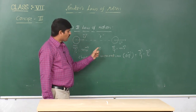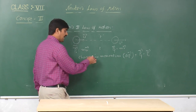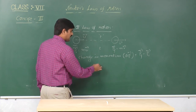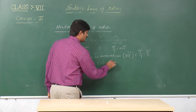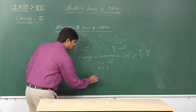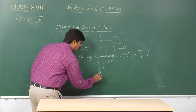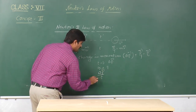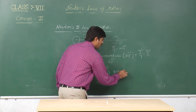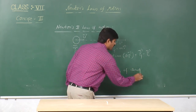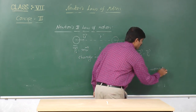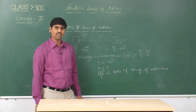This change in momentum occurred in time t. So in one second, what is the change in momentum of the body? In time t we got the change Δp. In one second, that is Δp divided by t. This is what we call the rate of change of momentum.